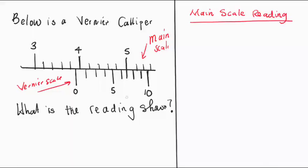What's the main scale reading here? The main scale reading is taken a line before the start of the Vernier scale. A line before the start of the Vernier scale is this one.